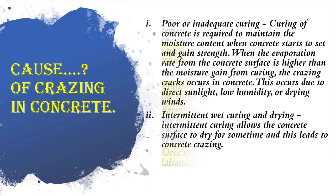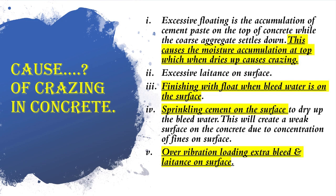Other causes of crazing in concrete include: excessive floating, which causes accumulation of cement paste on top of the concrete while coarse aggregate settles down, leading to moisture accumulation at the top that causes crazing when it dries. Additional causes are excessive laitance on the surface, finishing with a float when bleed water is on the surface, sprinkling cement on the surface to dry up bleed water — which creates a weak surface due to concentration of fines — and over-vibration, loading extra bleed and laitance on the surface.